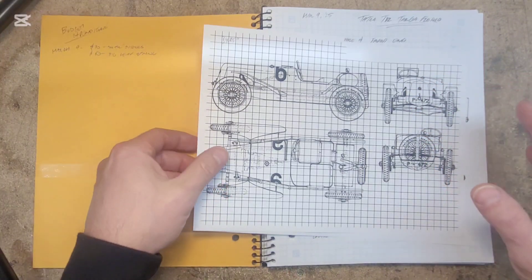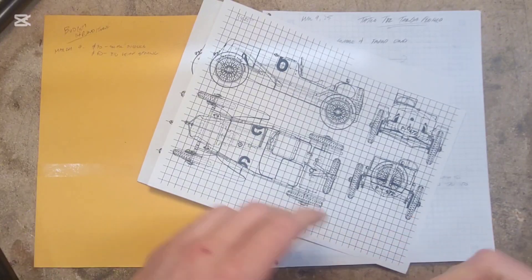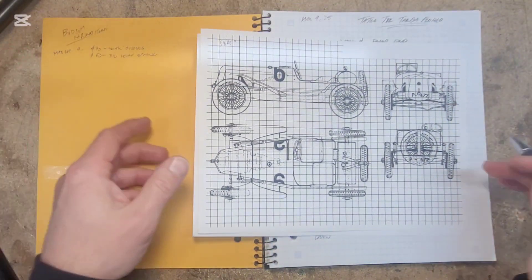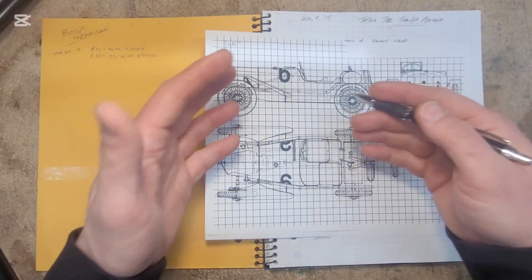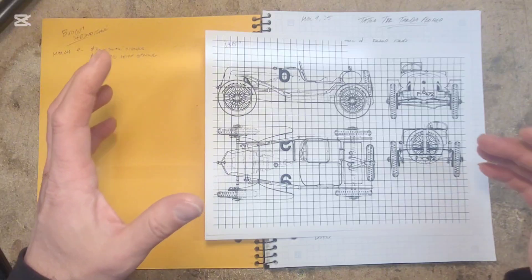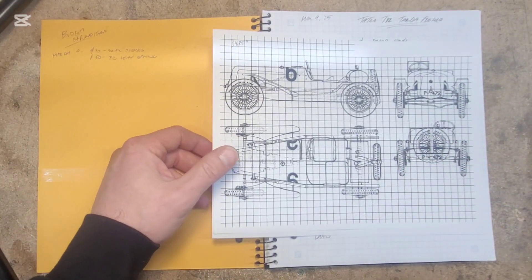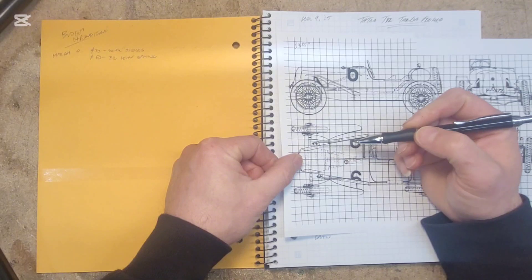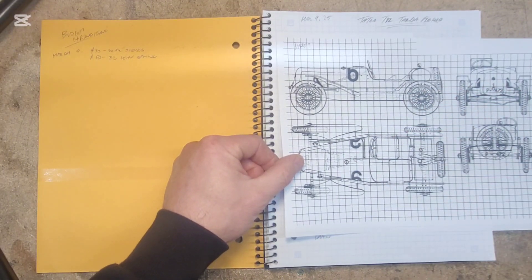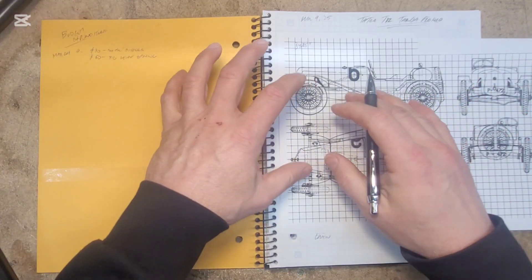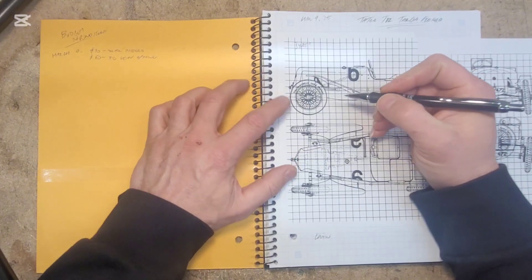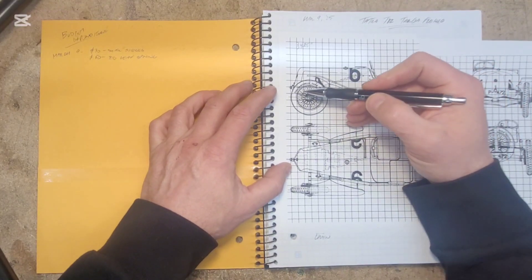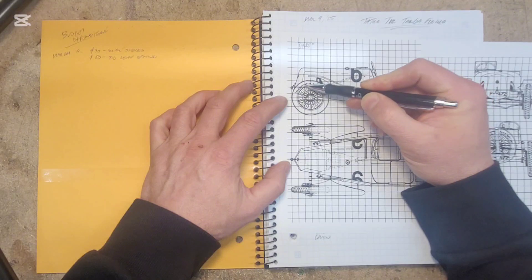Once you've got the schematic on a grid, you're probably wondering how do I get a scale for this, how big was the real car. Turns out you don't really need to know a lot about the original car. You just need to know that you're going to be using your wheel as your sort of main anchor point for making the rest of the car the right size.